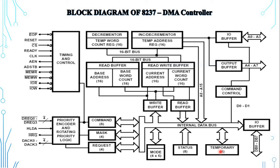In block transfer mode, the 8237 is activated by DREQ to continue the transfer until the terminal count is reached — that is, a whole block of data is transferred. Auto-initialization may be programmed in this mode. This transfer cycle may be terminated by EOP, which forces terminal count. DREQ needs to be activated only until the DACK signal is activated by the DMA controller. In demand transfer mode, the device continues transfer until terminal count is reached, an external EOP is detected, or the DREQ signal goes inactive.